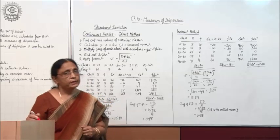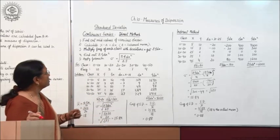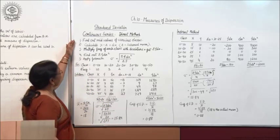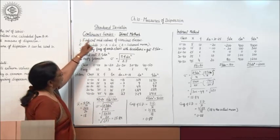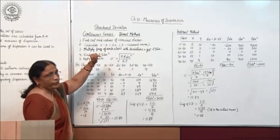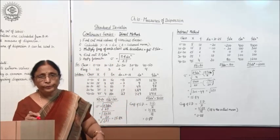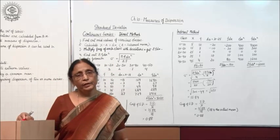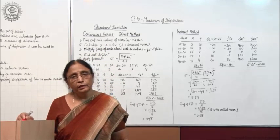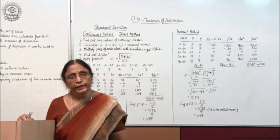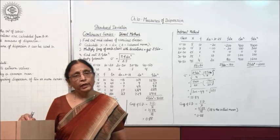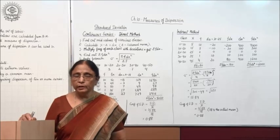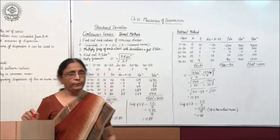Let us see with an example. Now, continuous series — this is the direct method. As I told you earlier, three methods are there: direct method, indirect method, and step deviation method, and we will take each one.